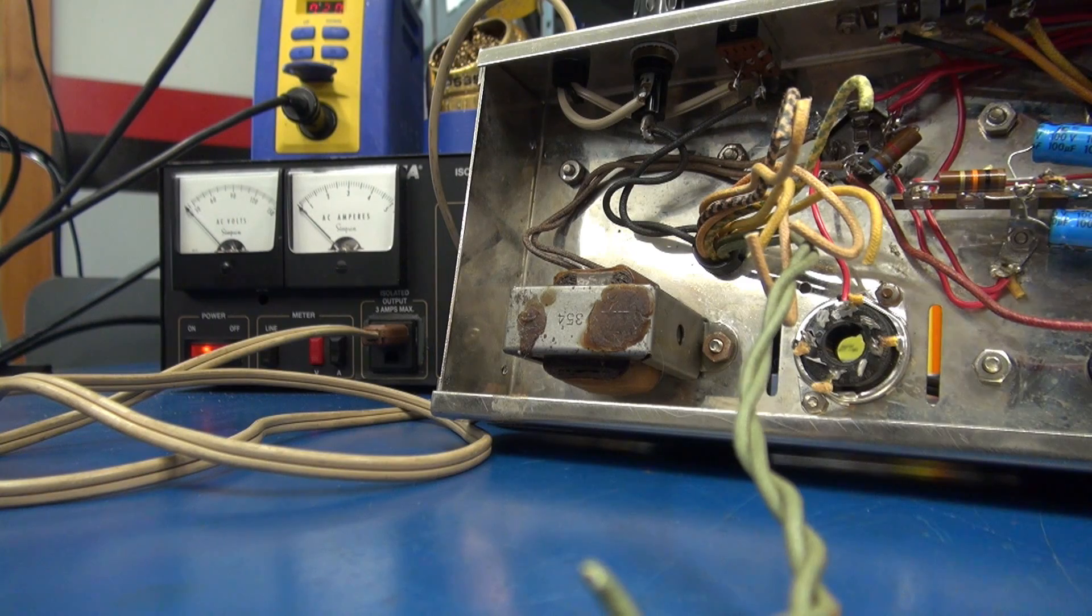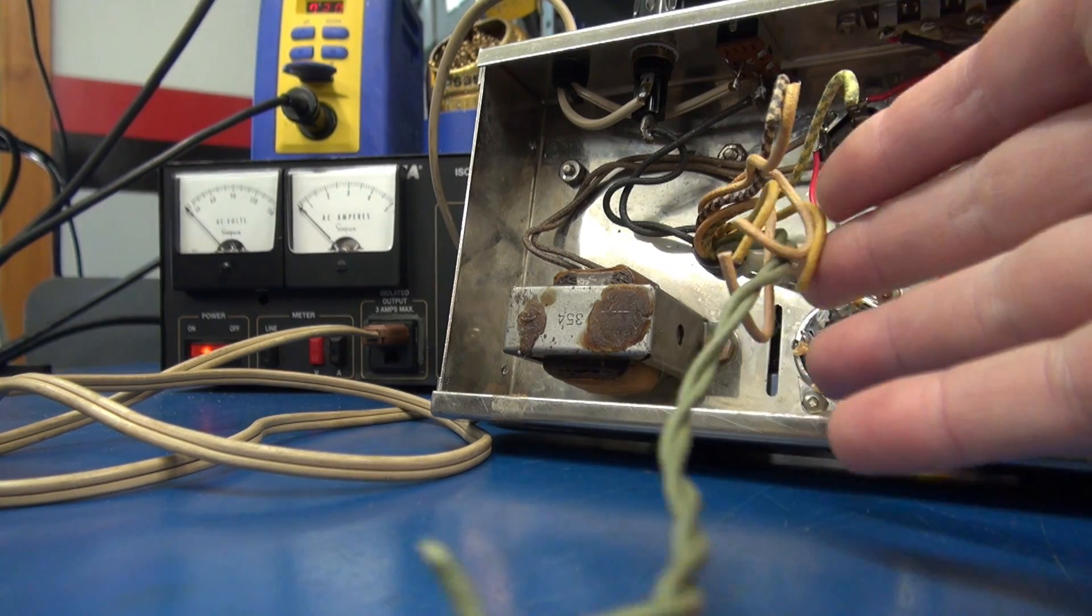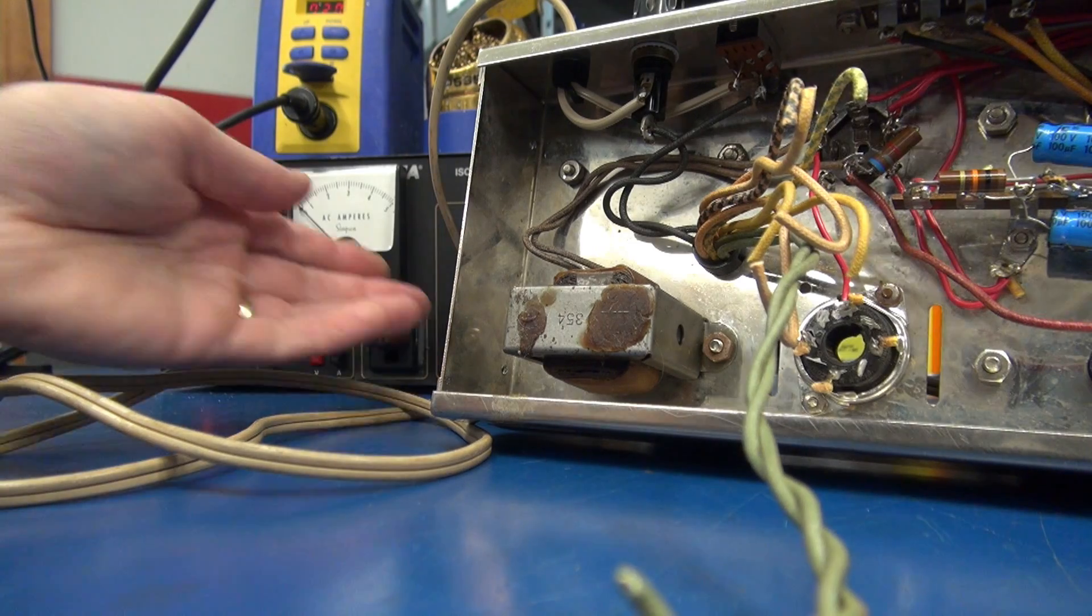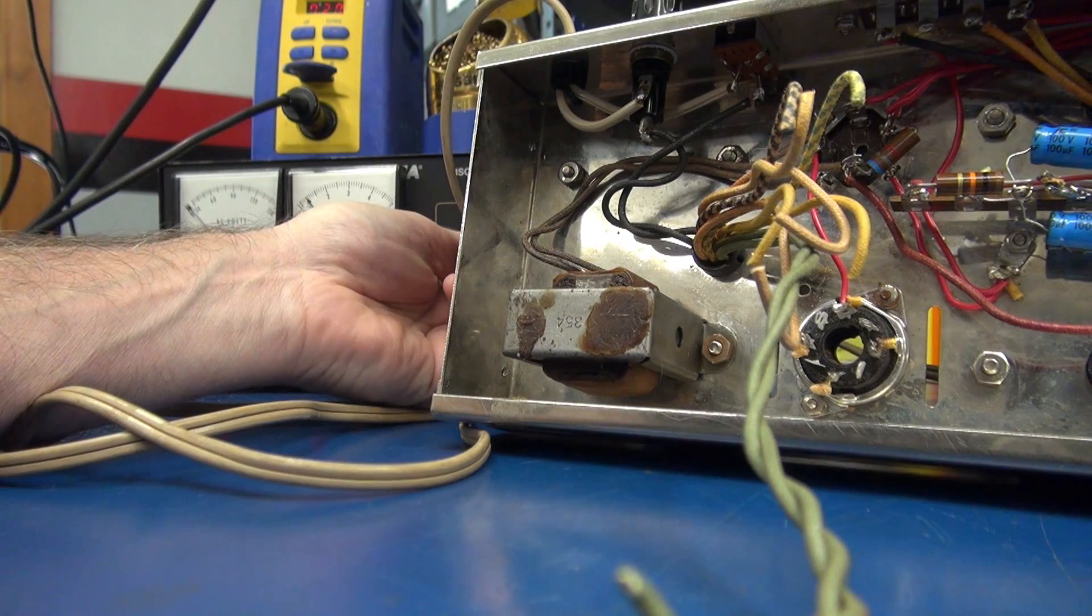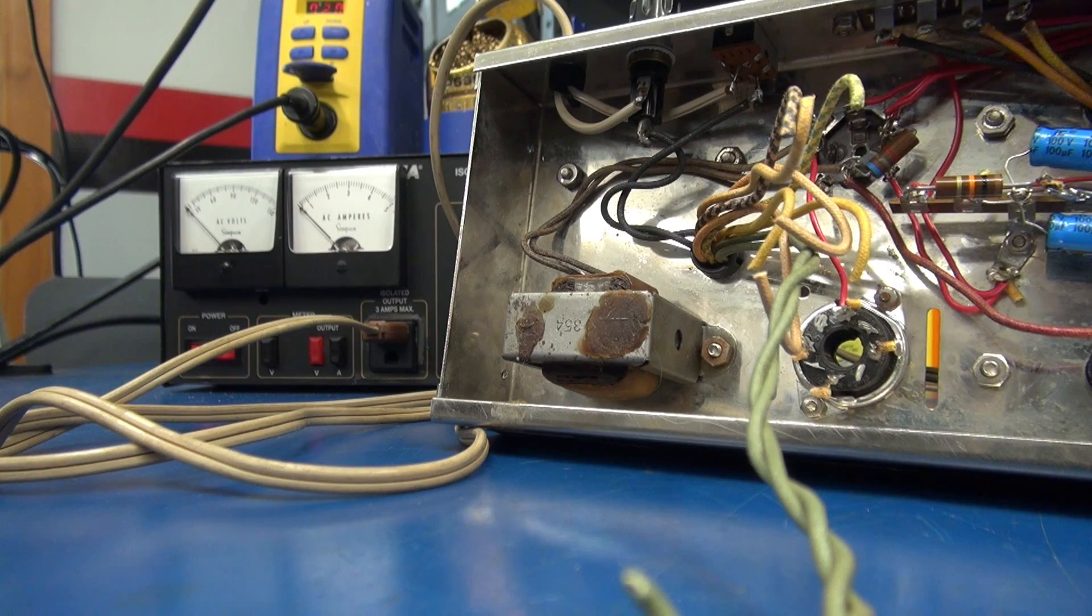Okay to absolutely verify that this power transformer is shorted I have all the leads on the secondary side disconnected. We are only feeding the primary. If I bring up my variac I'm still seeing the short. So unfortunately this transformer is shot.